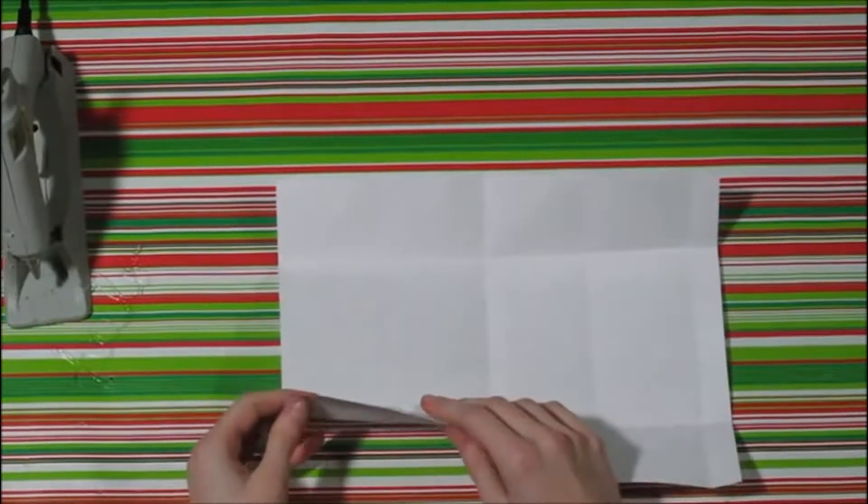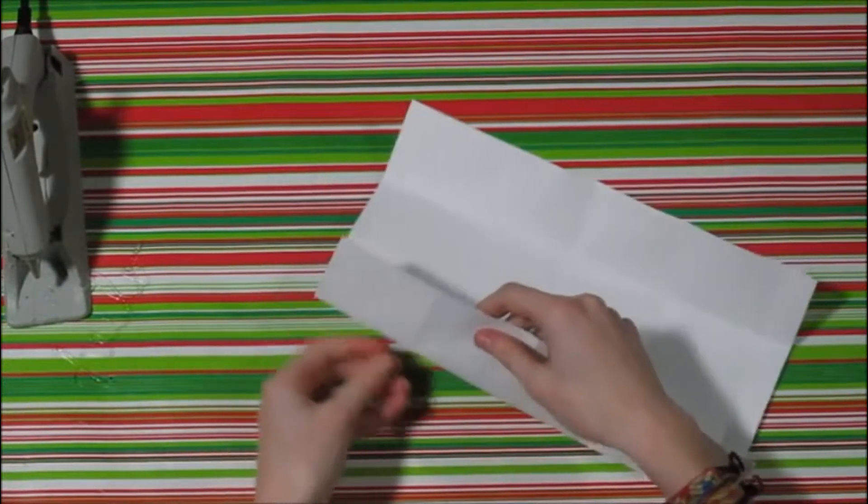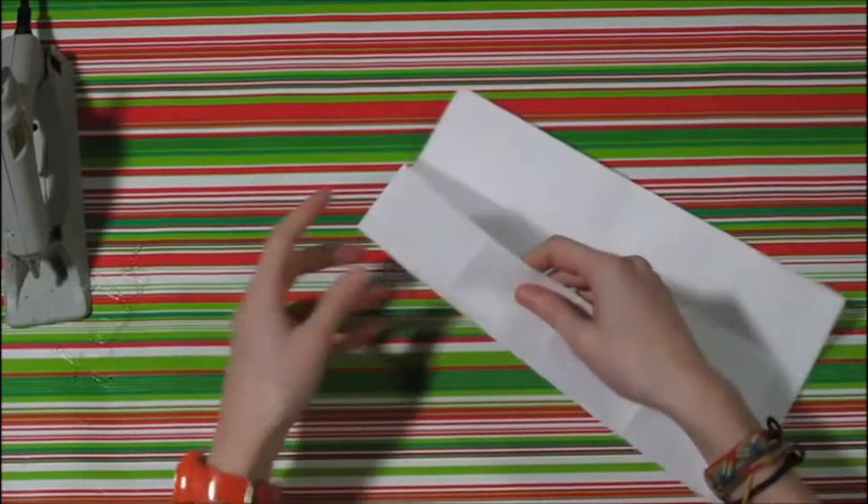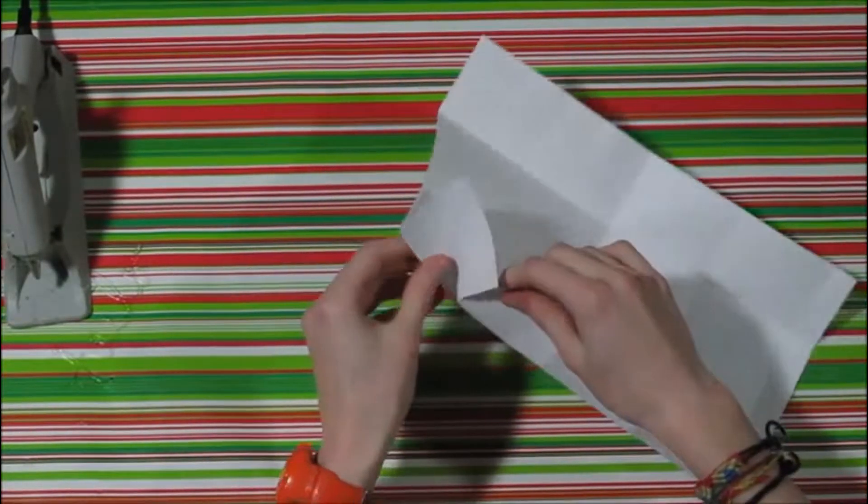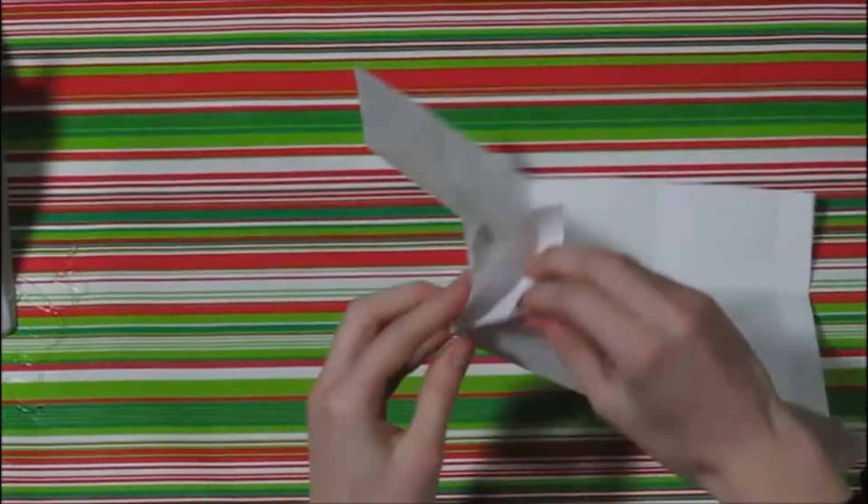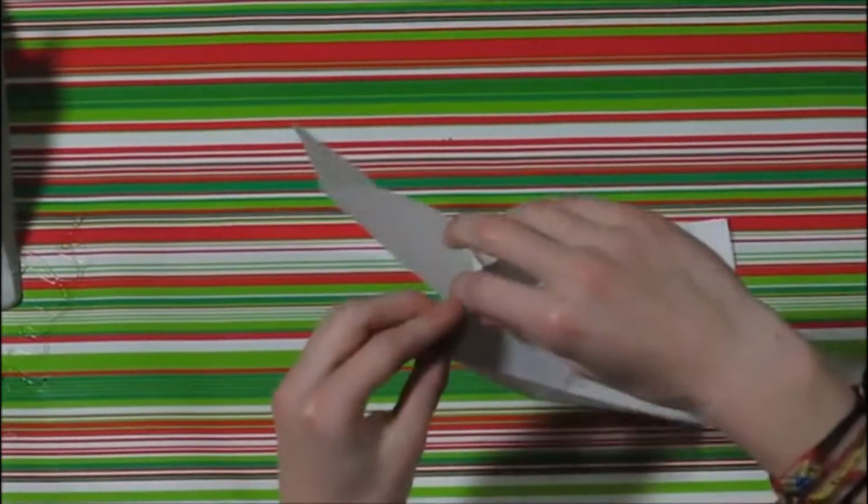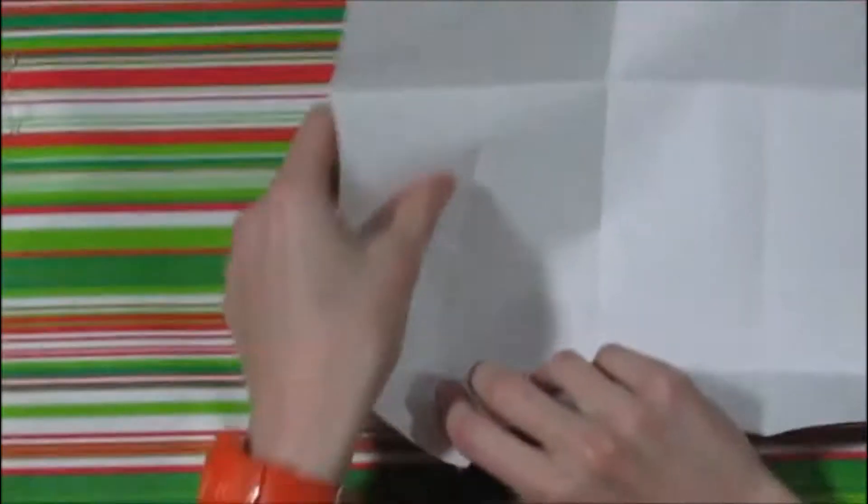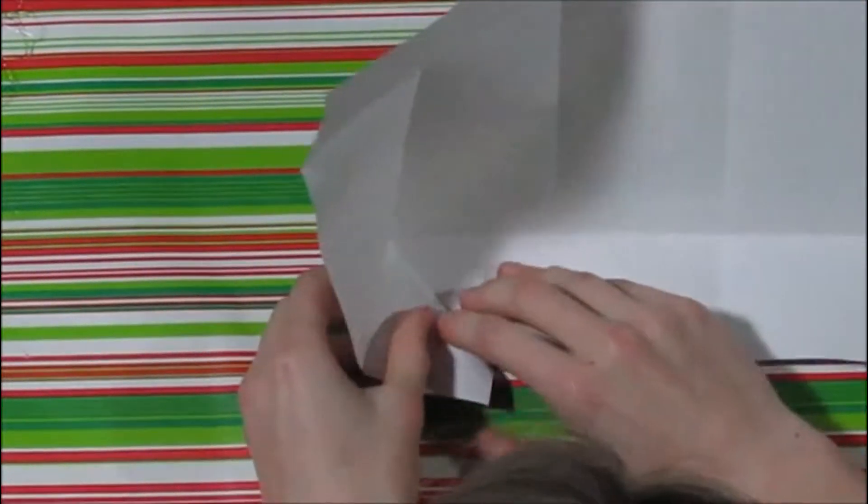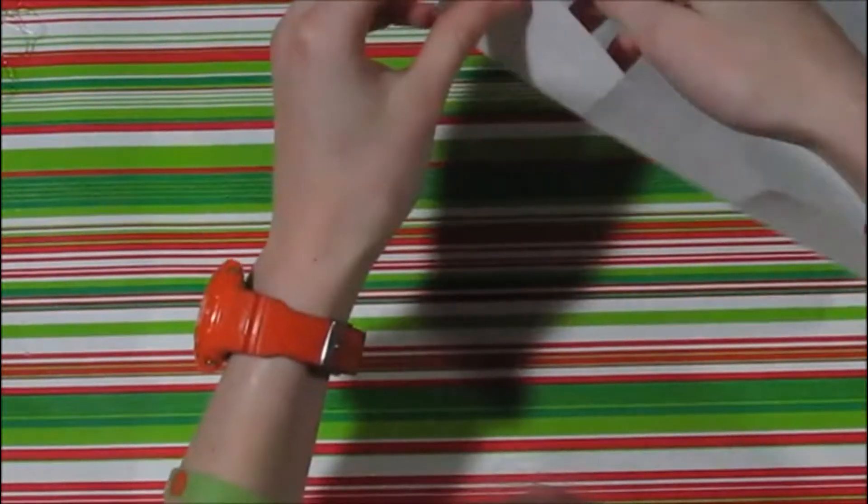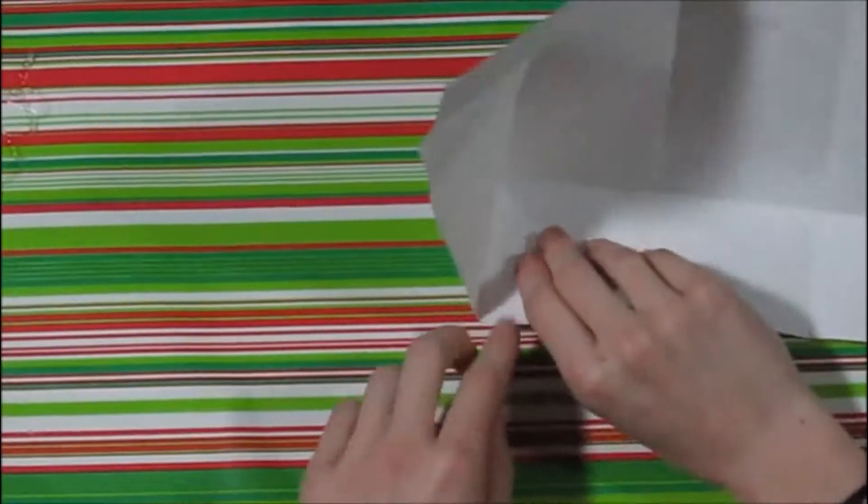So now this is kind of hard. It's a hard fold to do, so just look closely. I'm going to be doing it four times anyway. So you're going to take this part, so the fold here is going to be the corner. You're going to bring this part up to the line, like this. And then you're going to fold on the inside, like this.